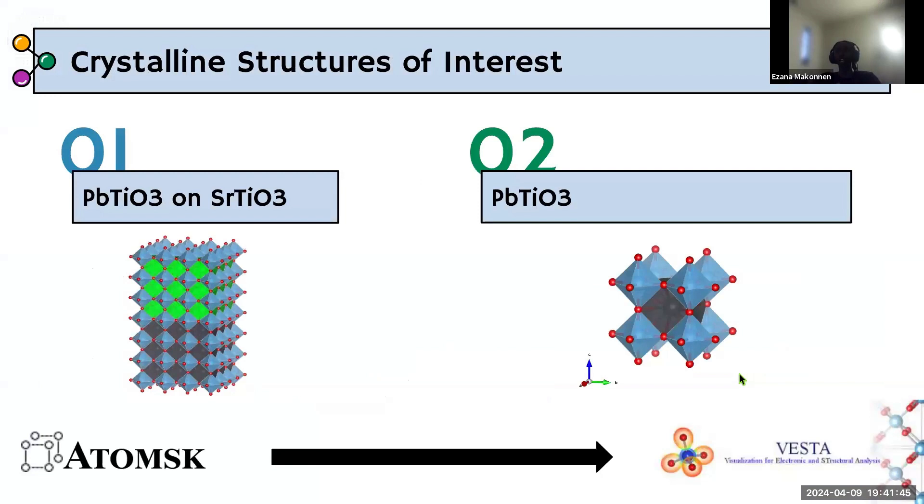Using tools such as Atomsk and VESTA, we're able to simulate crystals on an atomic scale. For example, we were able to generate lead titanate on top of strontium titanate, which gives us a better understanding of the total atomic structure of the crystal compound. The second model is just a single atom of lead titanate, which takes much less computing power to calculate the total energy of rather than the larger crystal.